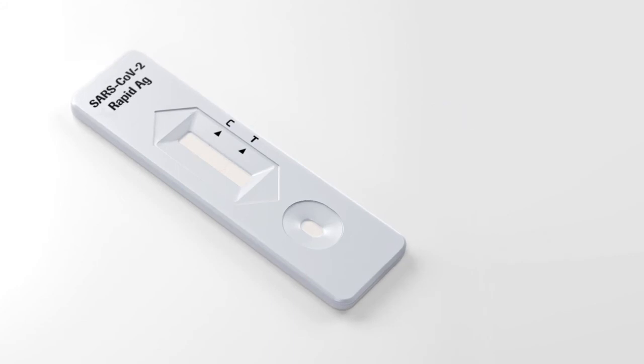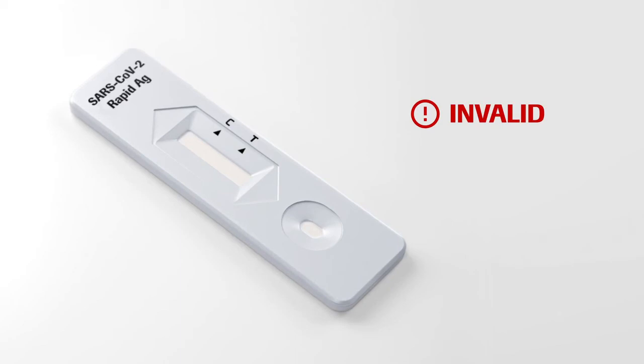If no control line C is visible, the test is always invalid. For diagnostic purposes, the results should always be assessed in conjunction with the patient's medical history, clinical examination, and other findings.